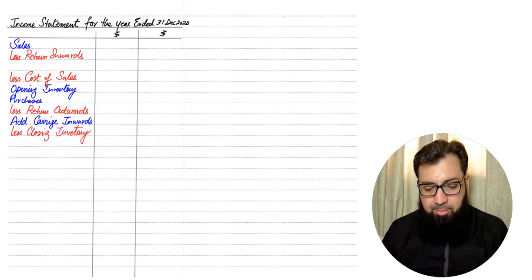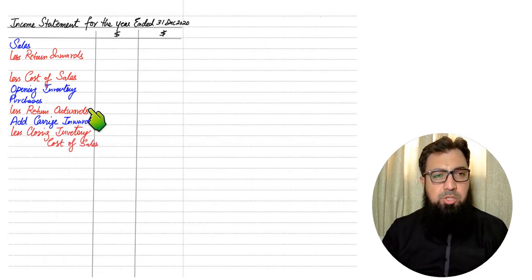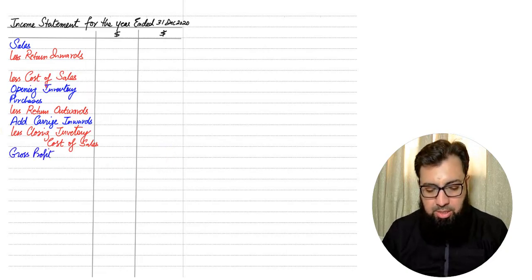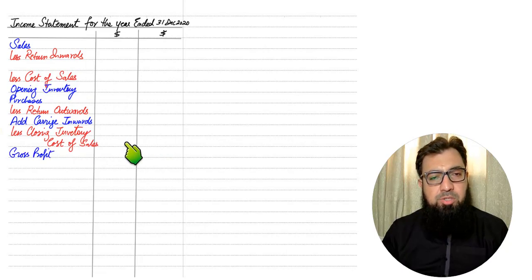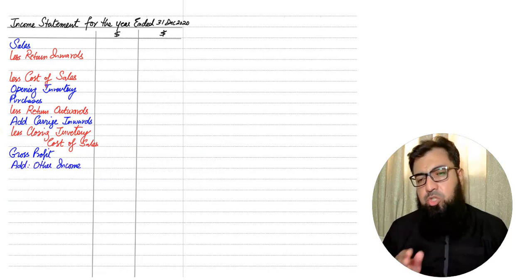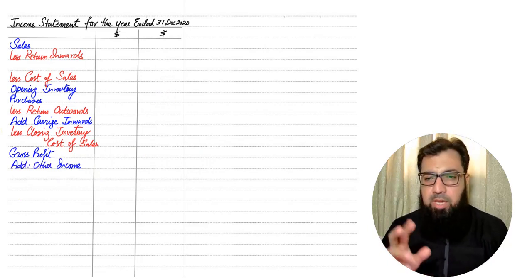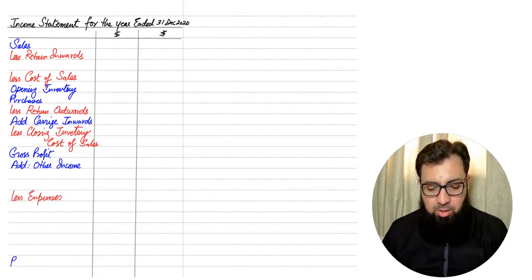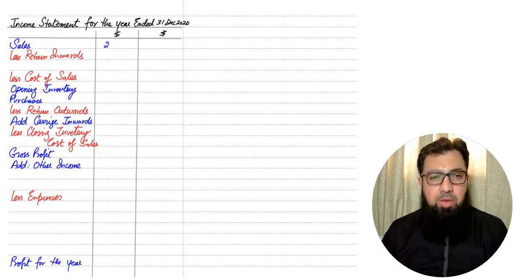We deduct closing inventory because those goods have not been sold yet. After adding and subtracting these items we get cost of sales. We write cost of sales twice — once as a heading and once for the final figure. Deducting cost of sales from net sales gives gross profit. Then we add other income, which includes rent receivable, commission receivable, discount received, gain on disposal, or decrease in provision for doubtful debts. Finally we have expenses and profit for the year.